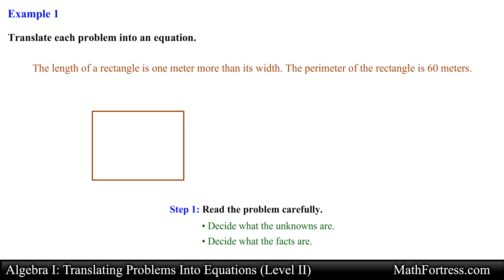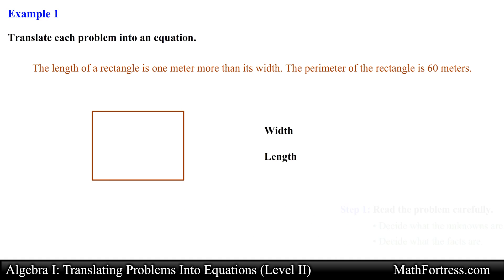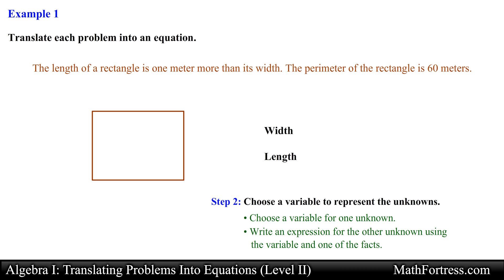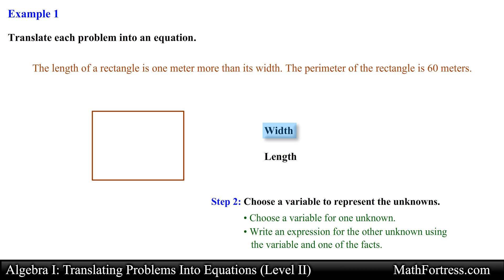The first step is to identify the unknown variables. In this example the unknown quantities are the length and width of the rectangle. Having identified our unknowns we now have to assign variables to them. As a rule of thumb we first want to assign the variable to the quantity for which we have the least amount of information. In this problem we have a description that relates the length with the width, but not the width with the length. This means we should assign the variable to the width — let's assign the letter x to it.